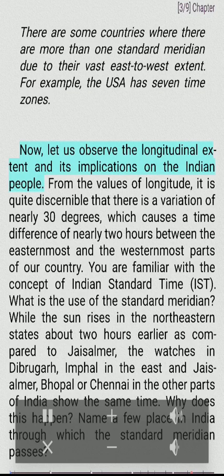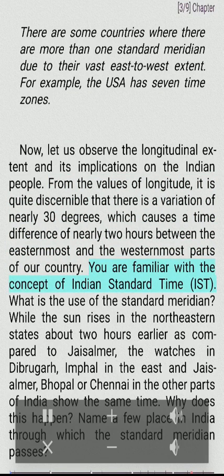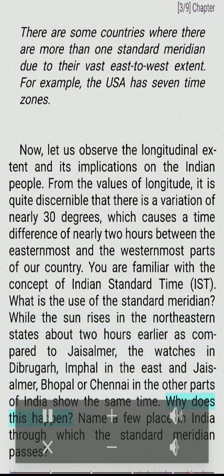Now let us observe the longitudinal extent and its implications on the Indian people. From the values of longitude, it is quite discernible that there is a variation of nearly 30 degrees, which causes a time difference of nearly two hours between the easternmost and the westernmost parts of our country. You are familiar with the concept of Indian Standard Time. What is the use of the standard meridian? While the sun rises in the northeastern states about two hours earlier as compared to Jaisalmer, the watches in Dibrugarh and Imphal in the east and Jaisalmer, Bhopal or Chennai in other parts of India show the same time. Why does this happen? Name a few places in India through which the standard meridian passes.